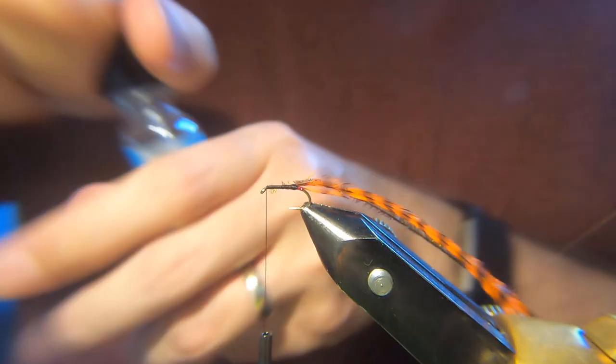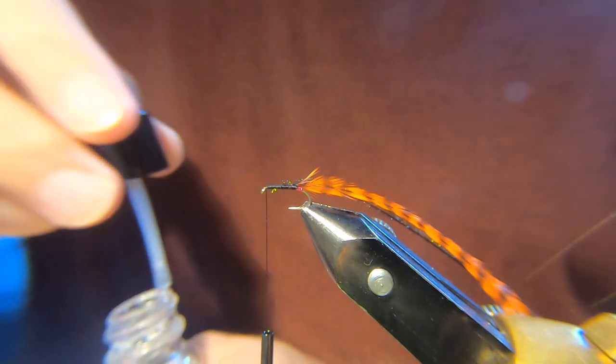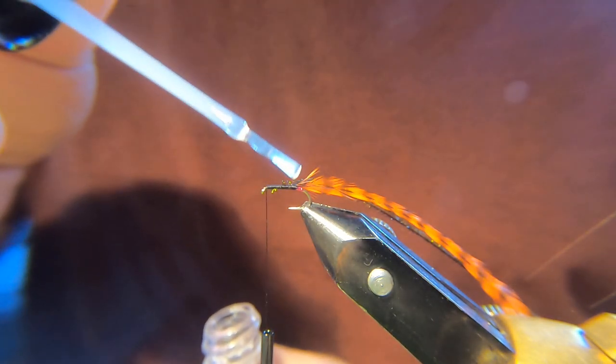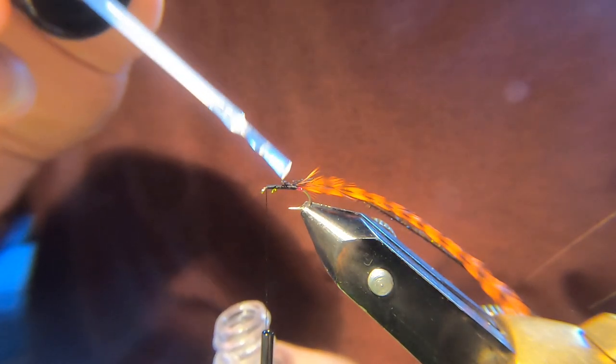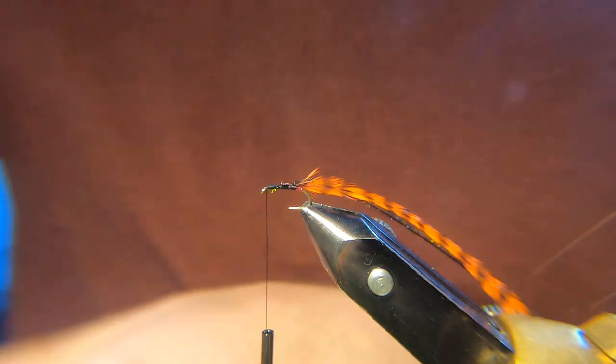And then I like to just get a wee... because the peacock herl is quite fragile, I'd normally use super glue but I don't know what I've done with it so I'll pop some varnish on it, just something to adhere it to the hook.